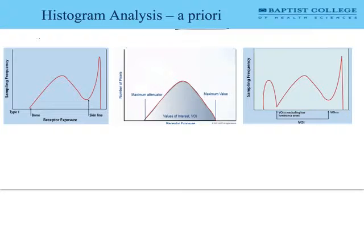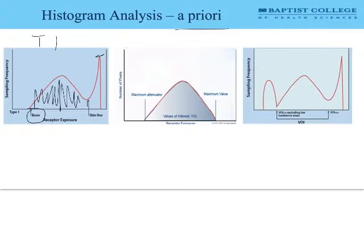With a priori histogram analysis, the analysis always relates to what the low and high values are that the computer is going to recognize. In Type 1, at the low side of the histogram — the brightest part of the image — we identify bone. Rather than sampling the darkest part, which might be surrounding air, we use the skin line as the other boundary. Everything between these two boundaries is our region of interest, or volume of interest, and these values are used to construct the x-ray image.